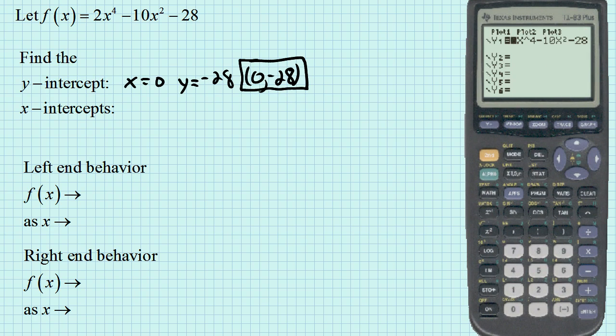Under y equals, you type in the formula. Get a good graphing window. The window I found that works well for this is having x between -10 and 10, but then having y go down to -40 and up to 20. When you get the graph, it looks like that.